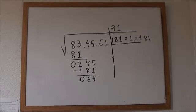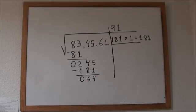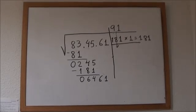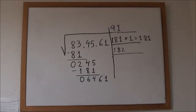We bring 61, the last two digits down. We bring 91 down as well, but doubled. That is 182.